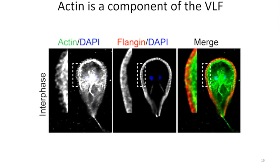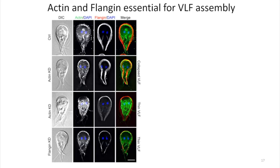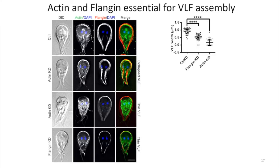What about actin? We fix and stain actin — we have to use an antibody because phalloidin doesn't work. You can see there's some actin out at the edge. Here's the flange protein, and you can see the actin actually protrudes a little bit further than the flange protein at the edge. It's a really thin structure compared to the body of the cell, which is why the filaments are hard to see. When we knock down actin, the cell can no longer deploy the flange — it collapses in on itself. When we knock down the flange protein, similarly, the flange isn't maintained properly. We can quantify that and both are significant.